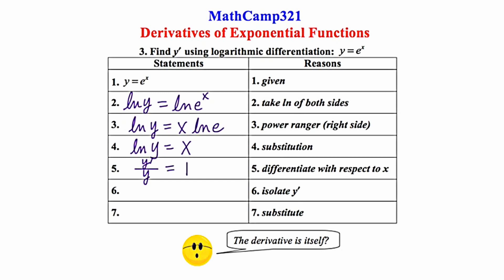Now I'm going to isolate y prime by cross-multiplying. y prime will equal y. And in our final step, we're told to use substitution again. Well, if you look at step 1, it tells you what y is.